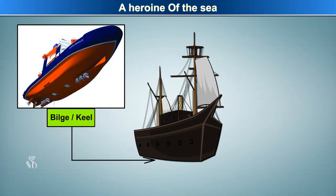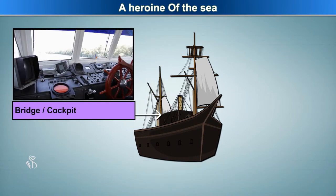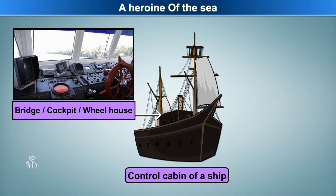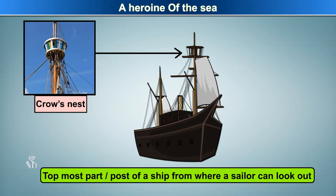Bilge and keel: the bottom of a ship. Bridge, cockpit, wheelhouse: the control cabin of a ship. Crow's nest: the topmost part or post of a ship from where a sailor can look out.